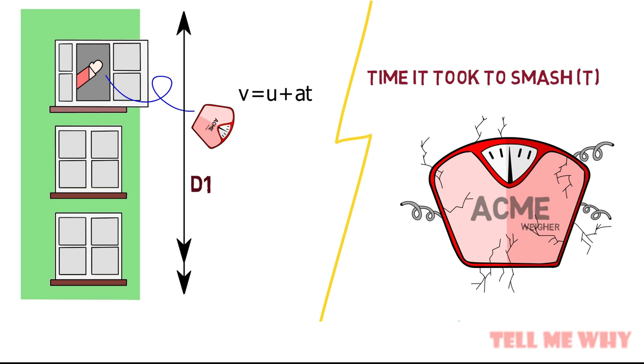Using Newton's equation of motion of a particle in uniform acceleration, we determine this acceleration to be equal to 9.8 meters per second squared.